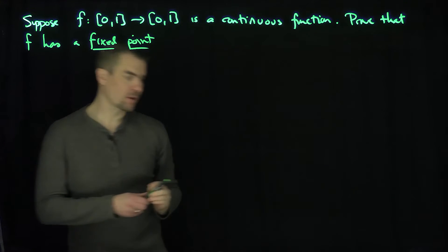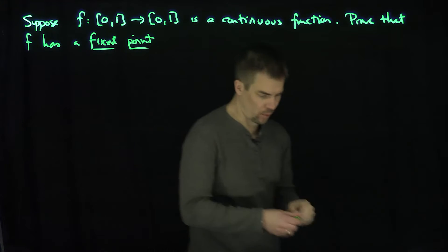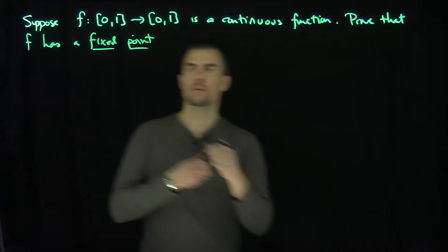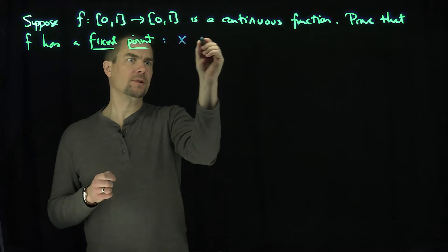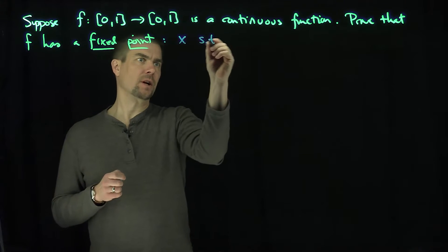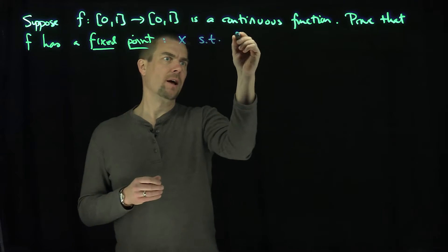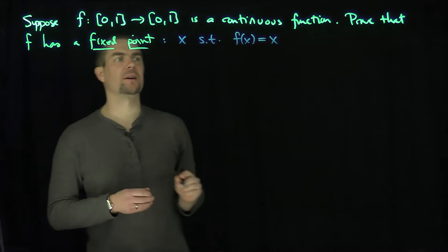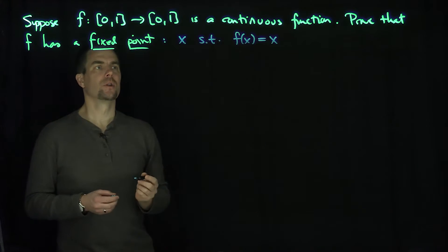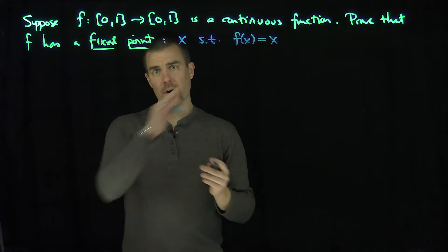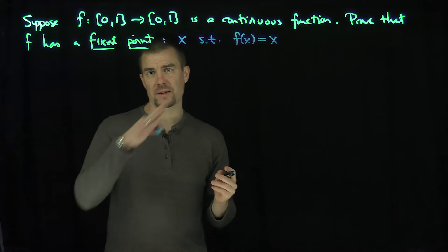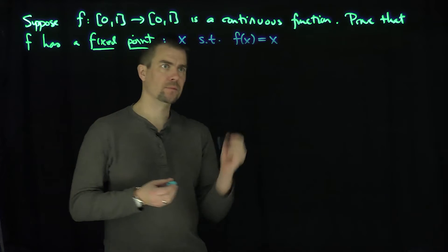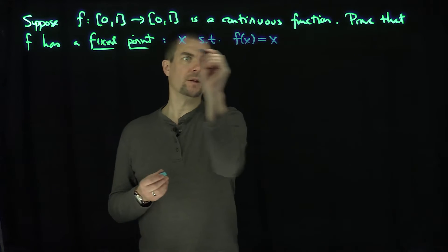So what is a fixed point? A fixed point is a point x such that f of x is equal to x. In other words, a fixed point is a point where the function intersects the identity function y equals x. That's what a fixed point is.